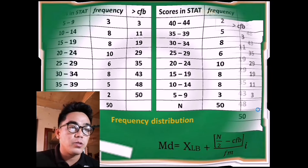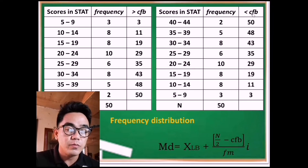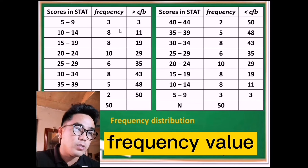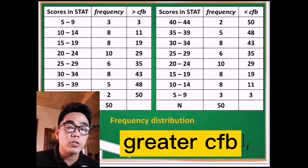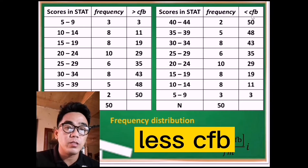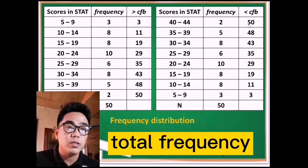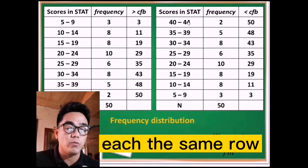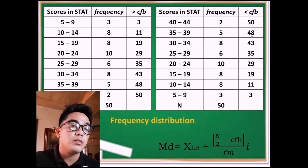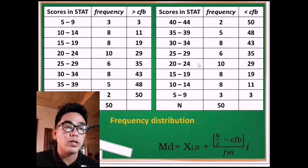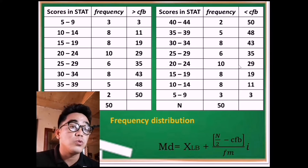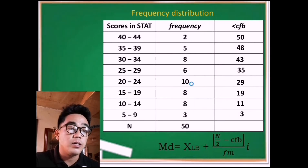Let us compare both approaches. In the greater-than cumulative frequency, we start with the first frequency then add the next row diagonally to get subsequent values. In the less-than cumulative frequency, we start with the total population and subtract each corresponding row's frequency — so 50 minus 2, and so on down to 3. These are the two different ways to solve the median of grouped data, but this time we will use the descending order arrangement.